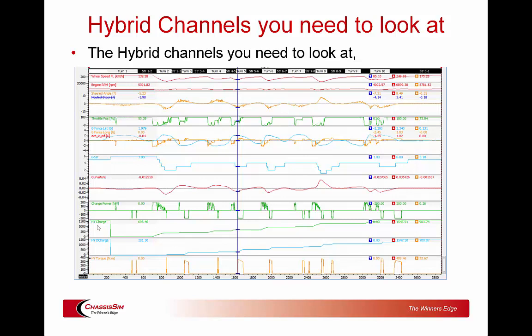If you haven't been able to hit your target, you can go through and figure out what's limiting you. Do you need to back off a little on mechanical braking so you can get the appropriate hybrid charge into the system? Or there might be other factors holding you back. That hybrid charge channel is a really good way of looking at that situation. The hybrid discharge channel is the twin reflection — it tells you how much you're able to get out.